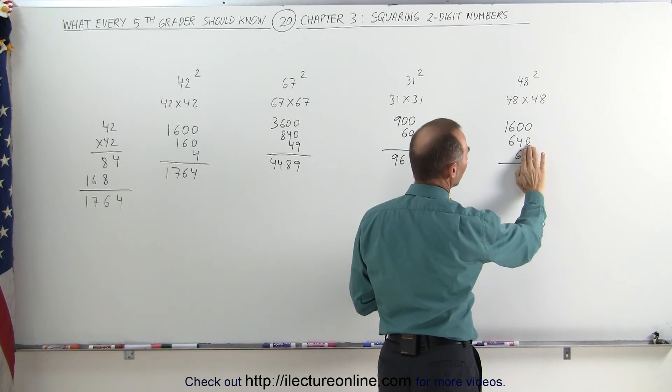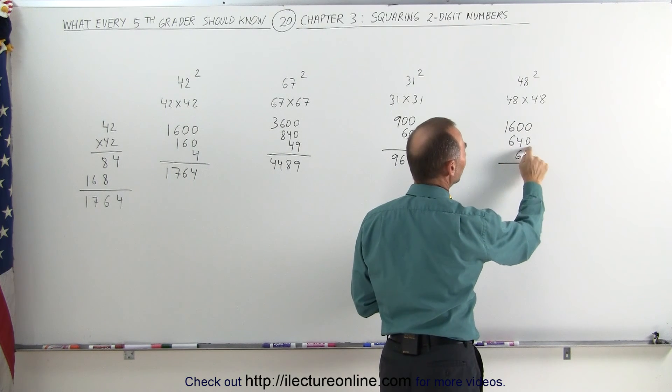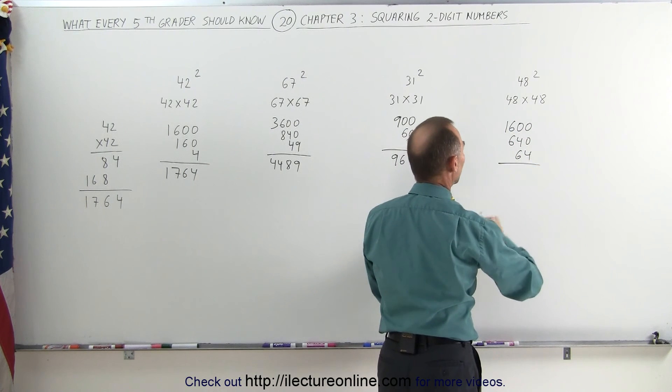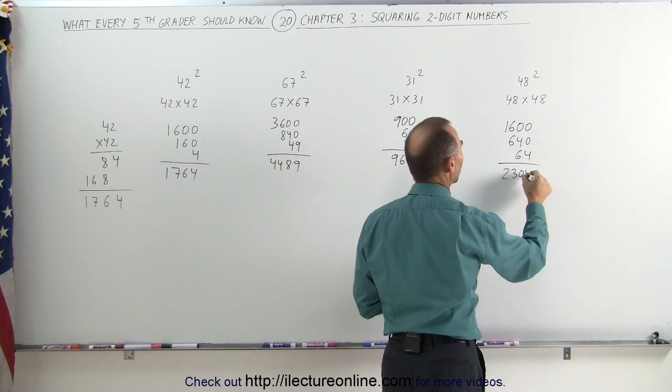Notice that if I don't add the 4 for now, 640 plus 60 is 700. 700 plus 1600 is 2300. Add 4 is 2304.